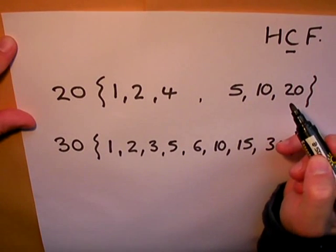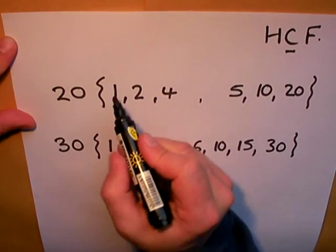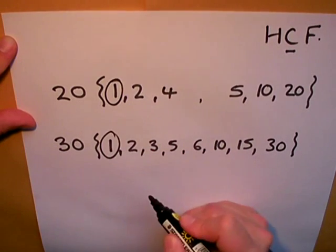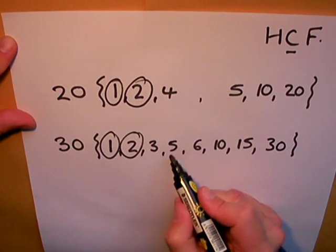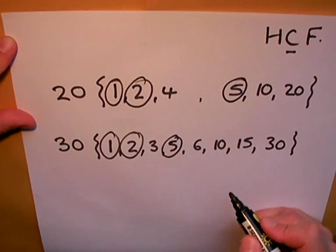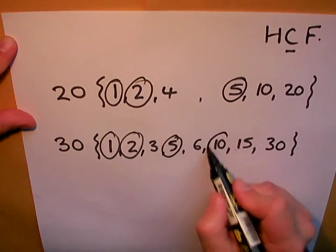Now I'm looking for the common factors, the ones that appear in both lists. 1 appears in both lists, 2 appears in both lists, 5 appears in both lists, and so does 10.